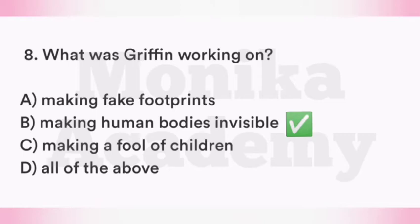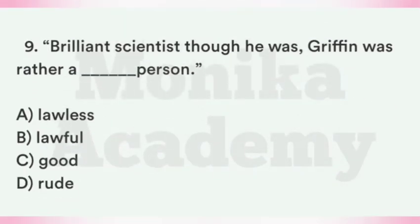Question 9: Brilliant scientist though he was, Griffin was rather a ___ person. Option A: Lawless — illegal काम करने वाला. Option B: Lawful. Option C: Good person. Option D: Rude person. The correct answer is Option A, Lawless. Griffin was a brilliant scientist but he was rather a lawless person — illegal काम करने वाला व्यक्ति था.